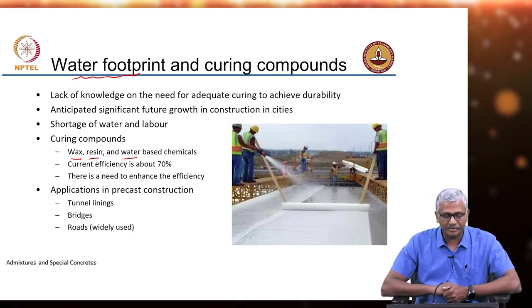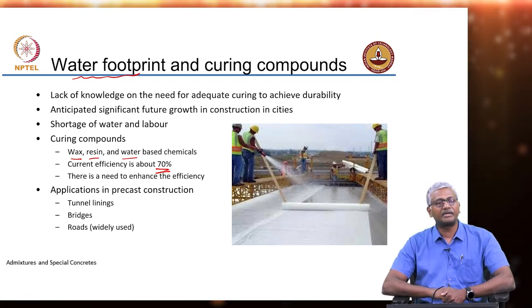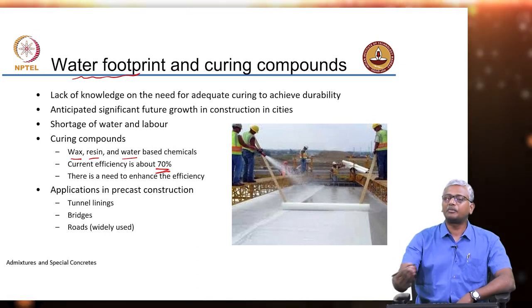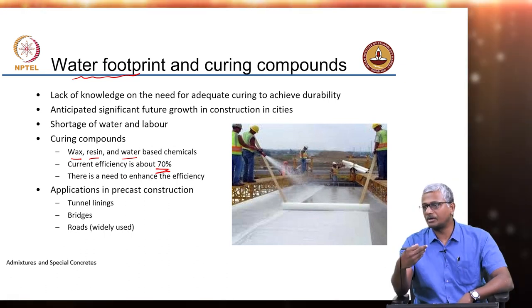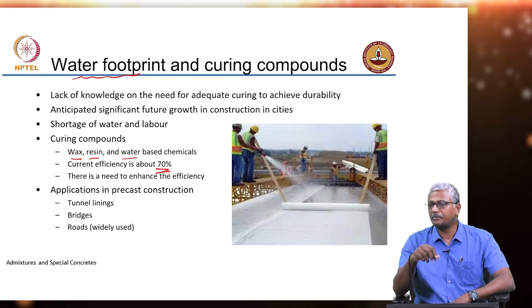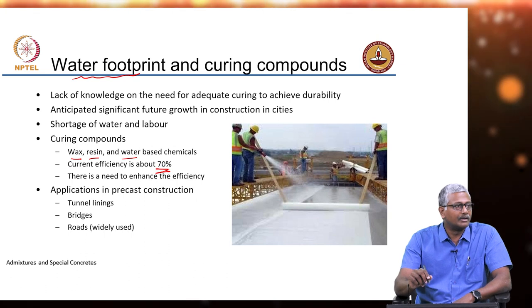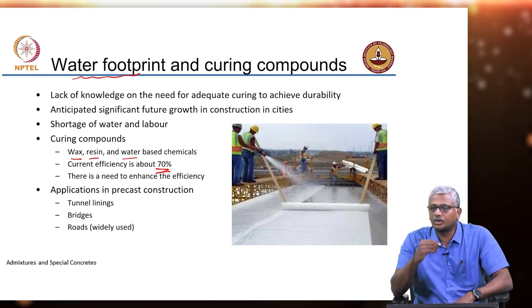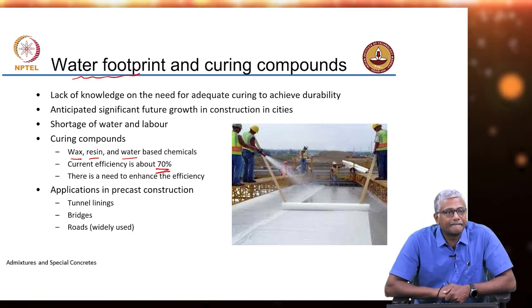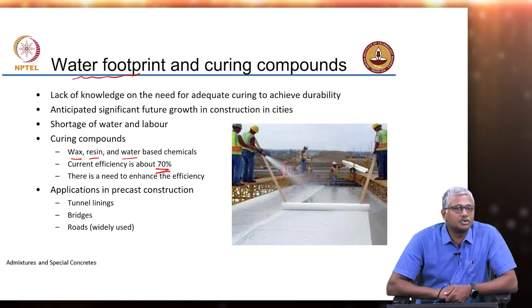That is only because application strategies are not properly devised and people often do not follow the recommendations of the curing compound manufacturers. A good value of efficiency for curing to be justified using curing compounds would be more than 90 percent. If you have 90 percent or more, it should be satisfactory — you cannot get 100 percent obviously, that is not possible. But anything more than 90 percent should be good.